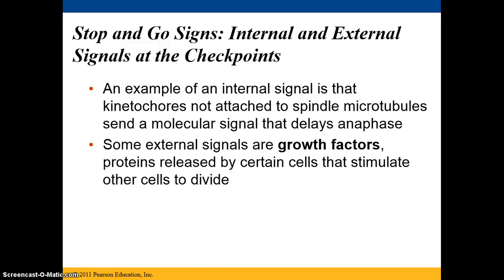An example of an internal signal: if a kinetochore is not attached to spindle microtubules, it sends a molecular signal that delays anaphase. The kinetochores attach to chromosomes at the centromere region; if not attached to a particular chromosome, they signal that chromosomes shouldn't spread apart yet. External signals include growth factors — proteins, possibly even hormones — released by certain cells to stimulate other cells to divide.